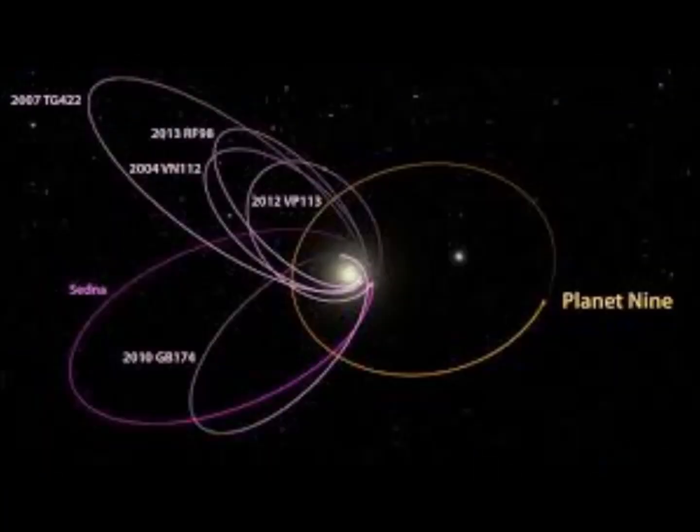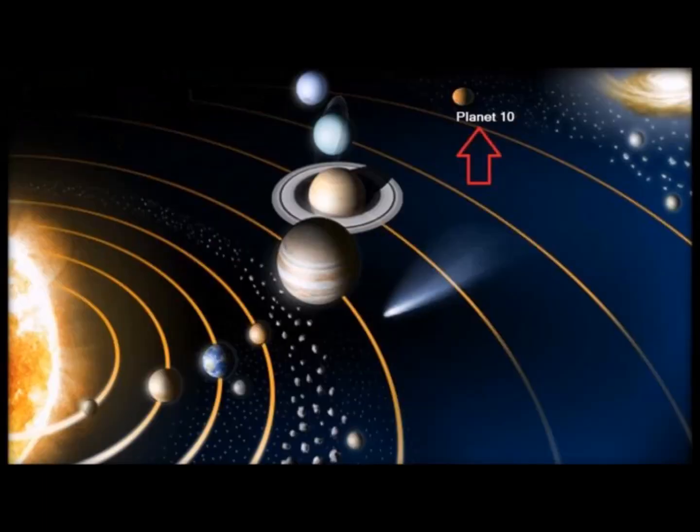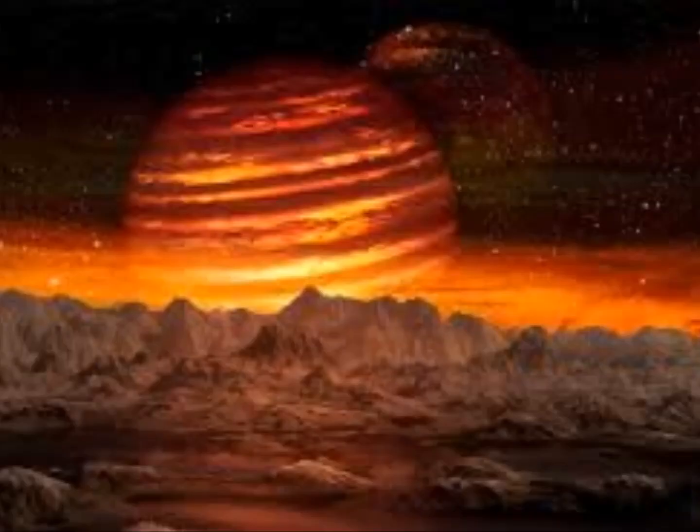In a new study published in the Astronomical Journal, researchers outlined novel information about an exoplanet known as HD 106906b that appears to have behaved similarly to the elusive Planet 9.